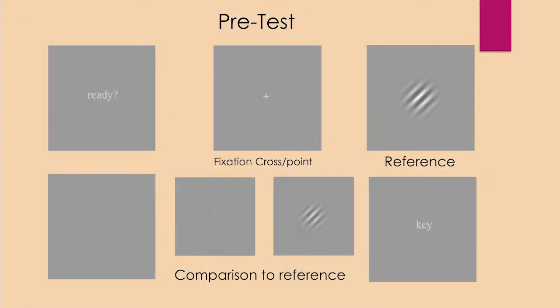These are the screens that would flash very rapidly for each participant on the computer. As you can see, they had a reference point and they were doing the contrast sensitivity task. They would see the first screen with the grading and then had the comparison to the reference. They had to tell us whether the first screen was dimmer or brighter than the second screen.